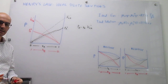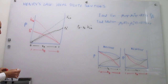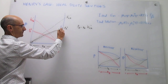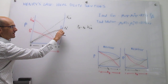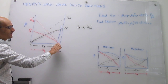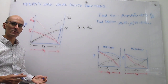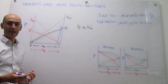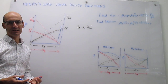Now we can define what an ideal dilute solution is. Focusing on the range of high concentrations of A and low concentrations of B: in this range, A follows Raoult's law and B follows Henry's law. The solvent — the majority component — follows Raoult's law, and the solute — the minority component — follows Henry's law. When you have that behavior, that is what you call an ideal dilute solution.